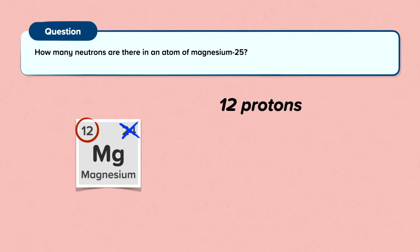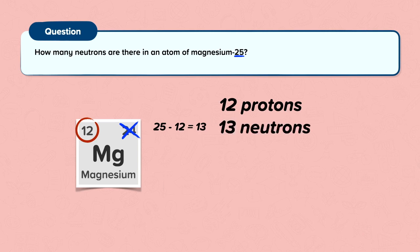The number of protons is 12 because all magnesium atoms have 12 protons. The number of neutrons is the difference between the mass number and the atomic number. Our mass number is 25, and 25 minus 12 is 13, so magnesium-25 has 13 neutrons.